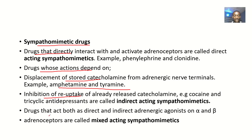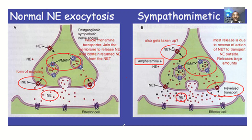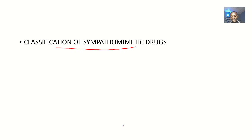There is another type: drugs that act both directly and indirectly — they act as direct or indirect adrenergic agonists on the alpha and beta adrenergic receptors. These drugs are called mixed acting sympathomimetic drugs. I'll be talking about direct acting, indirect acting, and mixed acting sympathomimetic drugs in separate lectures. If you need a lecture on any one of them, comment on this video and I'll drop you a link.